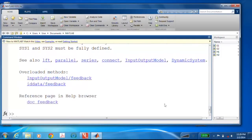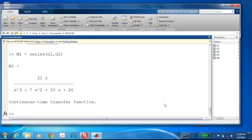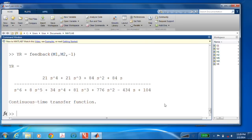Now, in our case, we actually had series combinations of G1 and G2. So, let's go ahead and make those. Our M1 is equal to series G1, G2. And M2, the feedback component, was equal to series H1, H2. Great. And for our closed loop transfer function, I'll call it YR, is equal to feedback M1, M2, and minus 1 because we had negative feedback. And there it is. So, much easier than doing all that by hand.